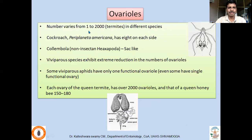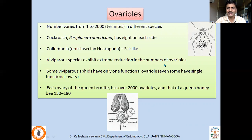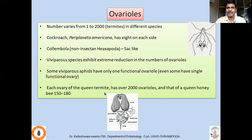The number of ovarioles varies from 1 to 2,000. The maximum number of ovarioles is found in termites, which can produce 3,000 to 15,000 eggs daily — attributed to their large number of ovarioles. Cockroach Periplaneta americana has 8 ovarioles on each side. Viviparous species show extreme reduction in ovariole number, with some having only one functional ovariole or even only one functional ovary. The queen termite has over 2,000 ovarioles per ovary, and queen ants have about 150 to 180.